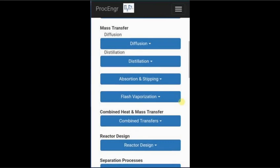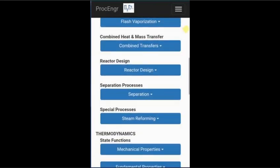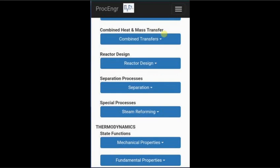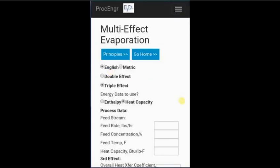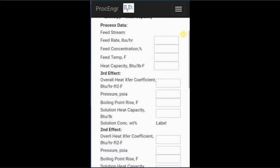The application allows us to perform calculations on either double-effect or triple-effect evaporators. It allows us to use either enthalpy data or specific heat data, depending upon what we have available. It allows us to use either metric or English units of measurement, and also allows us to change back and forth between units.